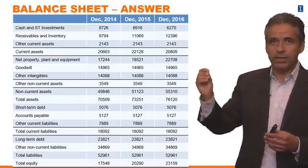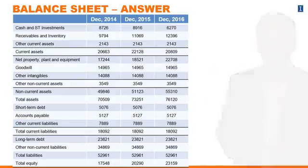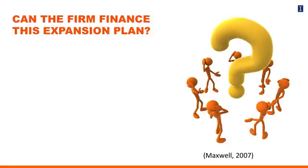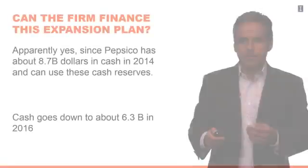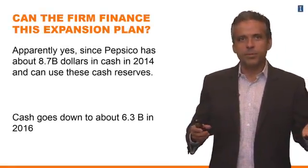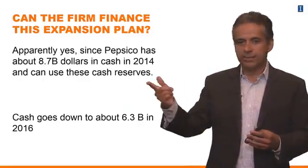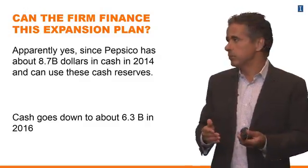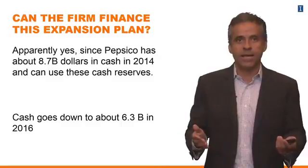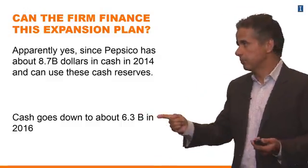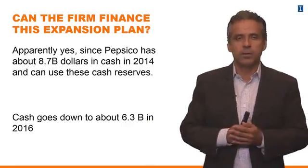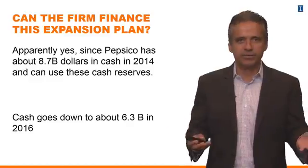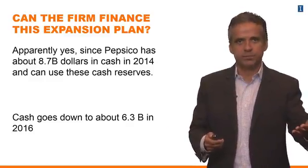Really the important number to think about is cash. Now we are ready to actually answer the question we posted in the beginning — we've done all the work, so now it's just analysis. Can PepsiCo finance the expansion plan or not, given this number? The answer is yes — it seems to be yes. PepsiCo has about $8.7 billion of cash in 2014. Cash is going down to $6.3 billion, but that still seems like a reasonable number. PepsiCo has sufficient cash to finance this expansion plan.